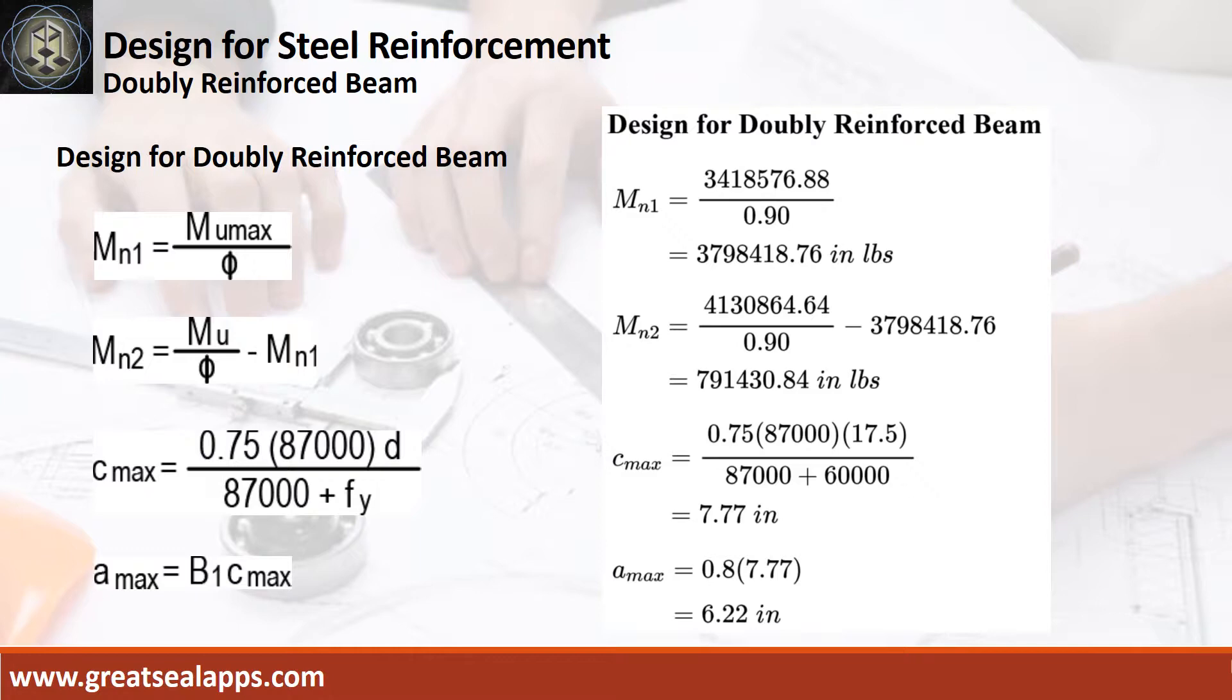Designed for doubly reinforced beam. Given MU max equals 3,418,576.88 inch pounds, MU equals 4,130,864.64 inch pounds, and resistance factor equals 0.9. The nominal moment of MU max is 3,798,418.76 inch pounds, and the additional nominal moment required is 791,430.84 inch pounds.